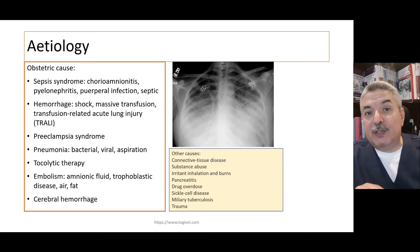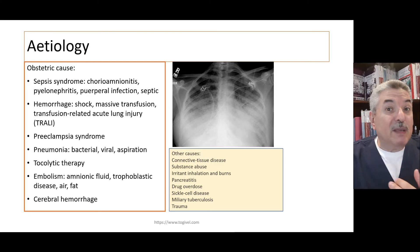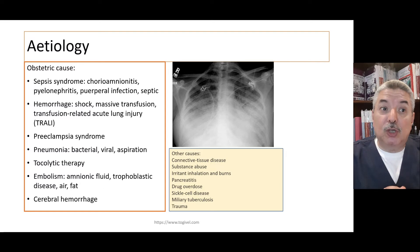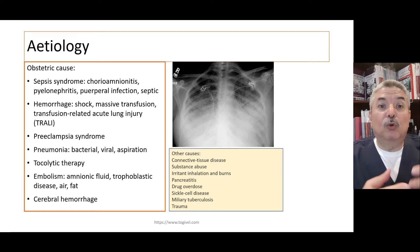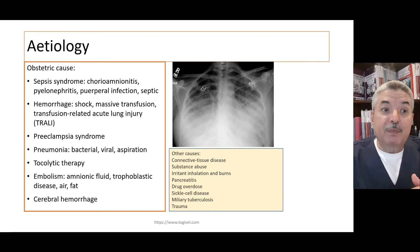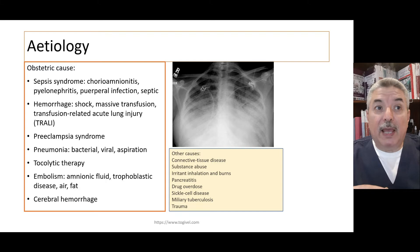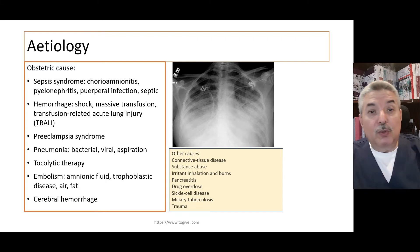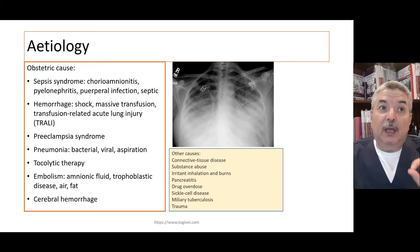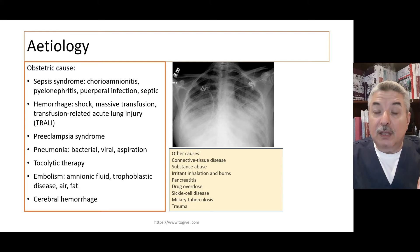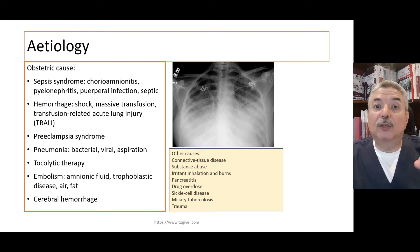The etiology of adult respiratory distress syndrome — as discussed in the previous session — can be transfusion reaction, sepsis, prolonged hemorrhage and shock, pneumonia, tocolytic therapy, embolism, or cerebral hemorrhage. The causes are not only the shock state; there are many obstetric causes that can lead to ARDS.